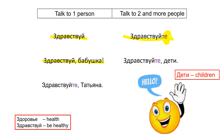Здравствуй, бабушка. Здравствуйте, дети. Дети means 'children.' Дети. It is an irregular plural form. Also, we don't say дети for one — we have the word ребенок for one child, and children is дети. But today I want you to remember only this word дети.